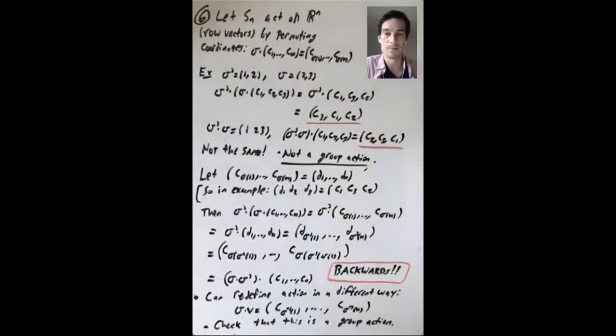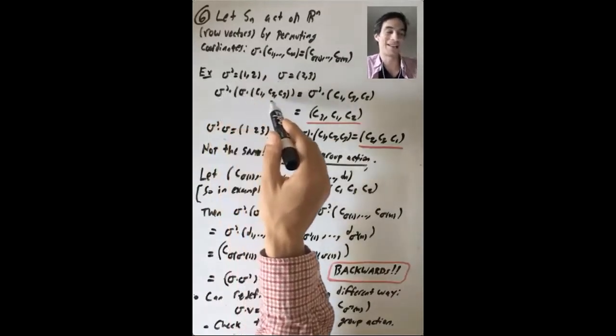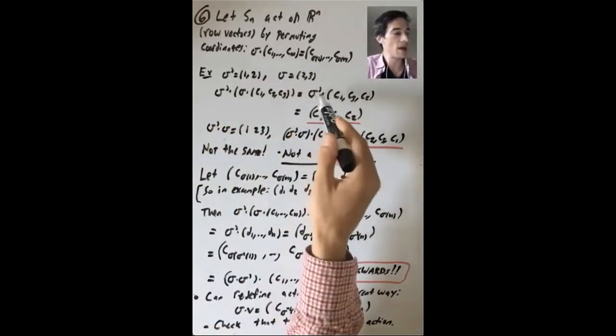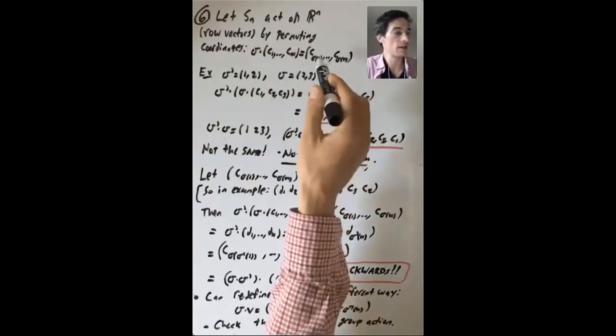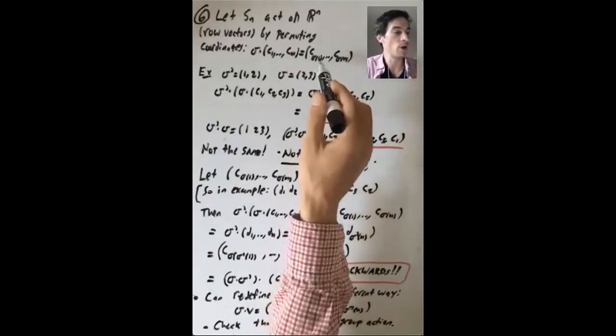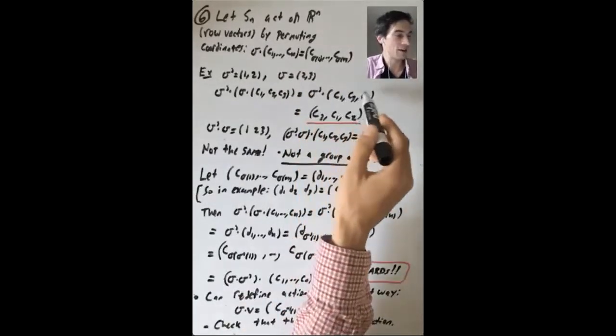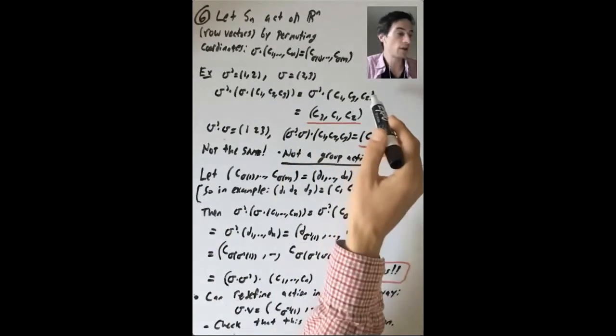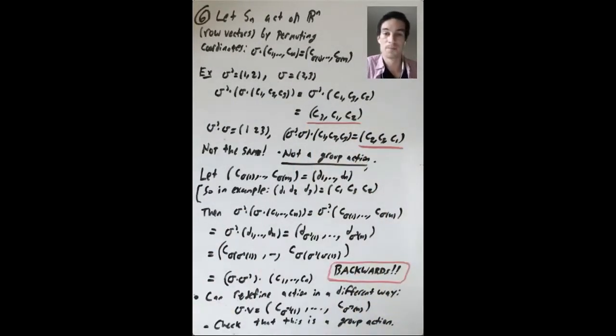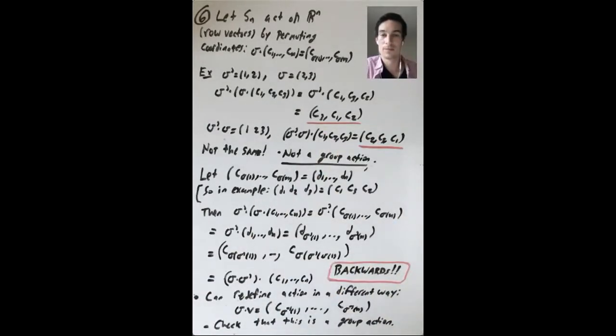So what is sigma prime acting on sigma acting on (c1, c2, c3)? Well, it's sigma prime acting on (c1, c3, c2), because what does sigma do? It keeps one fixed and it switches two and three. So sigma prime acting on this vector, what does sigma prime do? It leaves the last coordinate fixed and it switches the first two. So this gives (c3, c1, c2).